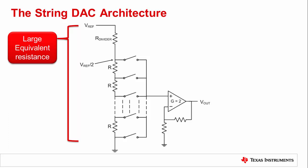An additional item of note is that the impedance of the resistor string will be quite high with all the resistors in series. As a result, the string DAC tends to be a low-power DAC.